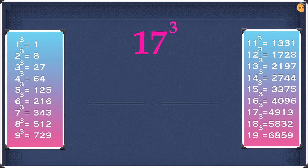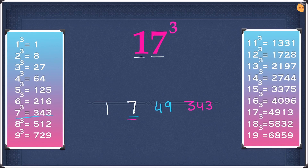Now let's look at this example which is 17 cubed. Firstly we are going to repeat the same digit, so write the 1 and the 7. Then we are going to square the second digit, which is going to be 49, and then cube the second digit, which is going to be 343. Now we're going to leave the first and the last digit and double the two middle digits — 7 doubled is going to be 14, and 49 doubled is going to be 98.